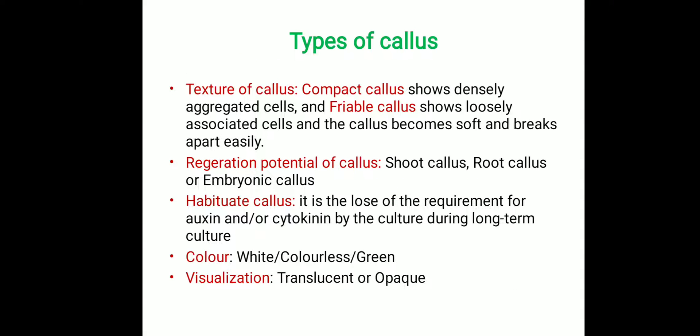Now let's see the different types of callus. Based on texture, callus can be categorized into compact callus or friable callus. Compact callus shows densely aggregated cells, while friable callus shows loosely associated cells. Generally in the early stage after inoculation of explant we see loose friable callus, and after some time it becomes dense compact callus. Loose friable callus is ideal for preparations like suspension cell culture or single cell cultures.